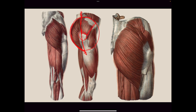The gluteus medius comes in — it looks like a triangle. And then you have this third muscle, which is not a glute muscle. It is called the TFL, which stands for tensor fasciae latae. In back view: here is my sacrum, gluteus comes up and over, comes about halfway down the leg.